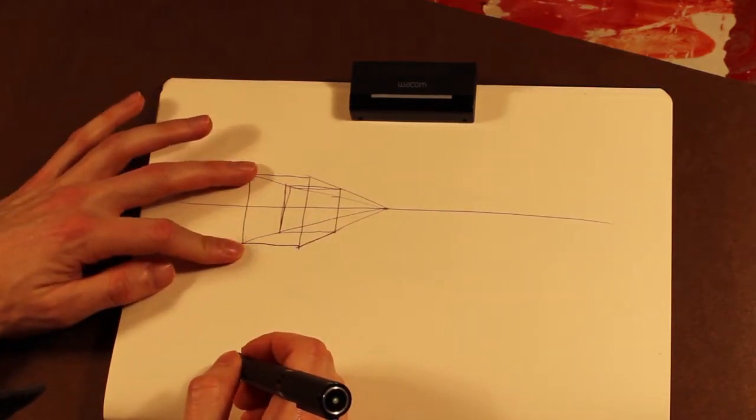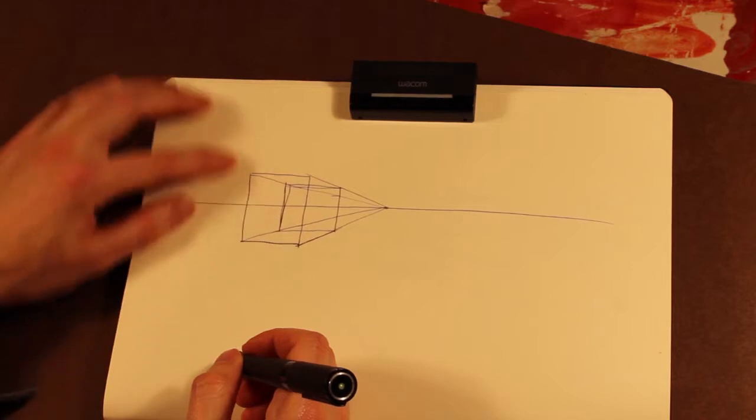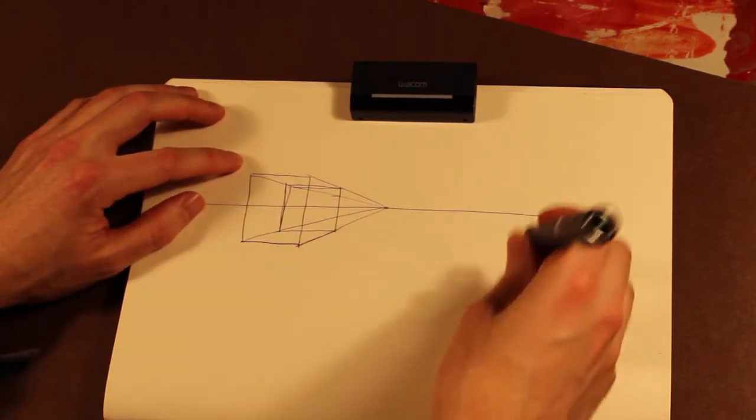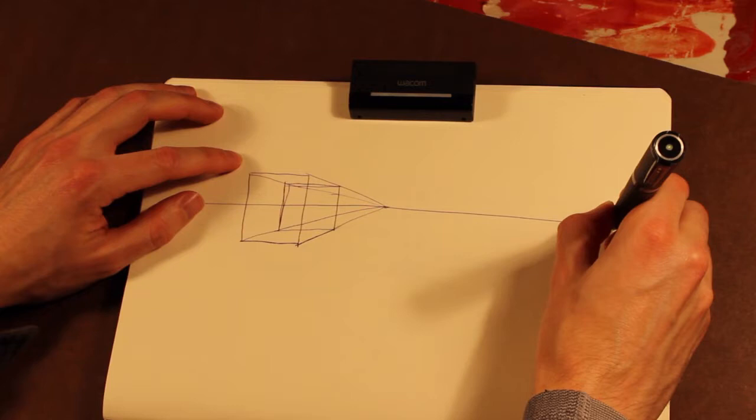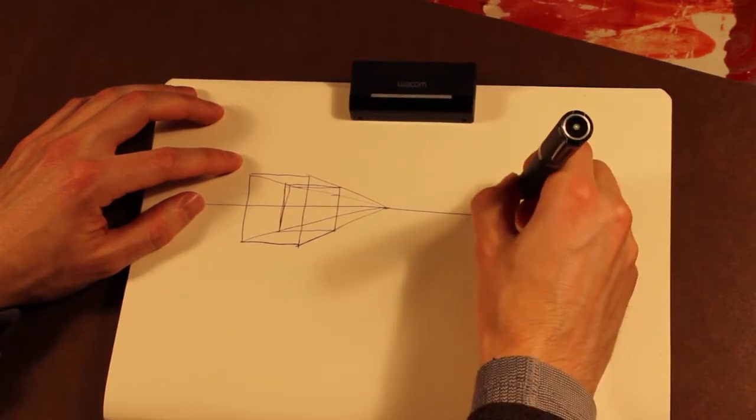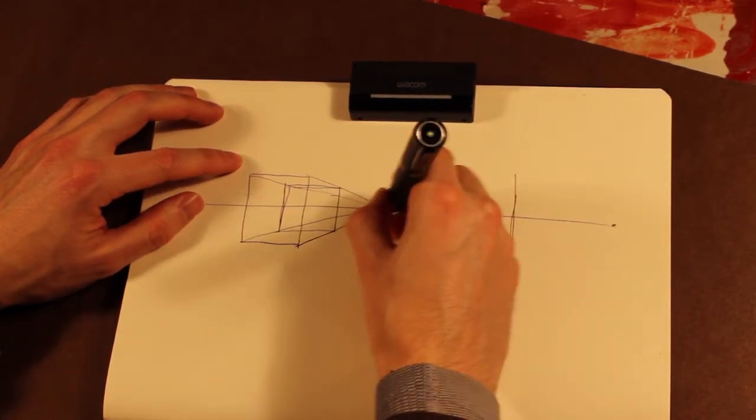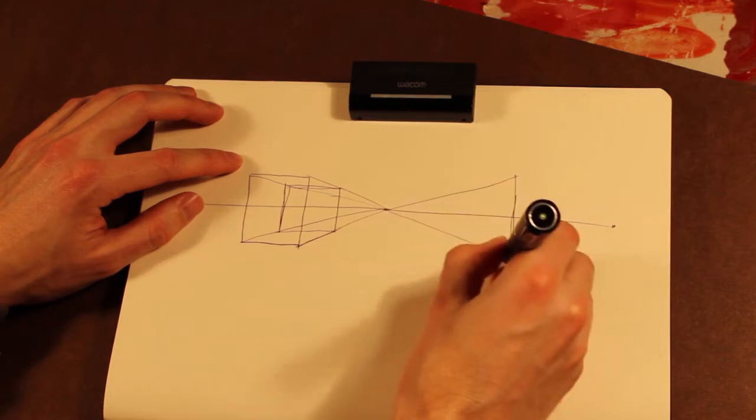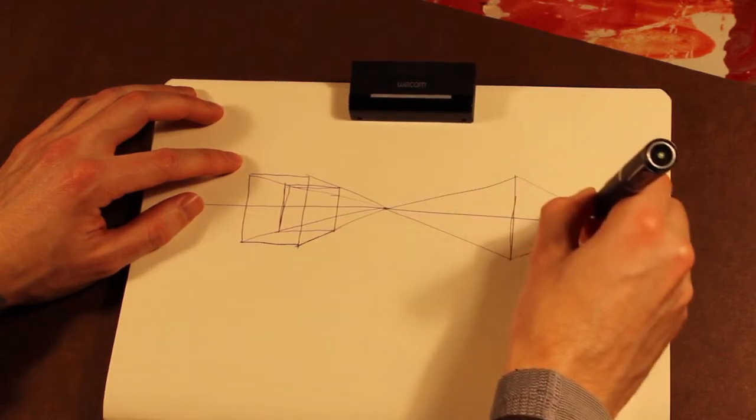You'll notice this starts to be a little odd looking here. That's why you would choose to use two point perspective in a different sort of situation, so that you have lines receding on both sides.